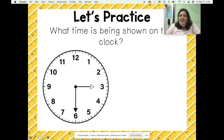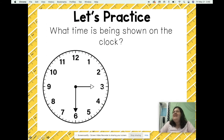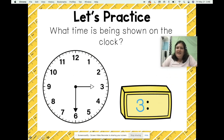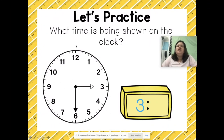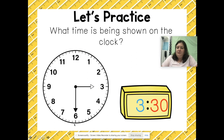Let's practice. What time is being shown on the clock? Starting with the hour hand — the short hand looks like it's pointed towards the 3, so it's going to be about 3 o'clock. Now I need to figure out the minutes, so I'll start at 12 and skip count by fives until I get to where the minute hand is landed: 5, 10, 15, 20, 25, 30. The minute hand is pointed toward the 6, so the time being shown is 3:30.